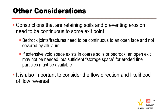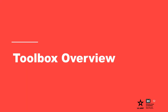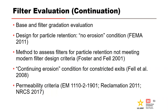To wrap up the presentation, the worksheets available in the RMC Filter Evaluation Continuation Toolbox are: the first worksheet performs a particle size analysis of the base and filter gradations and determines if regrading of the base soil is necessary; the second worksheet evaluates the existing filter for particle retention based on the no erosion condition; the third worksheet follows the Foster and Fell methodology to assess the existing filter when it does not satisfy the no erosion criterion; the fourth worksheet assesses the continuing erosion condition for constricted or non-erodible exits; and the fifth worksheet assesses the existing filter with regard to permeability criteria from USACE, Reclamation, and NRCS.